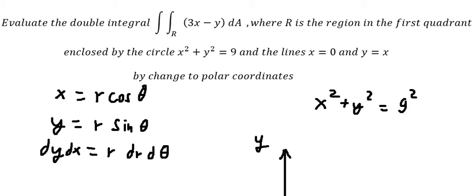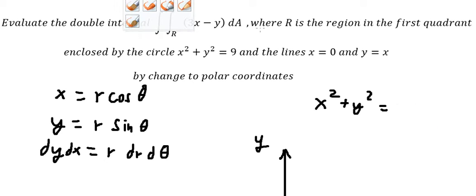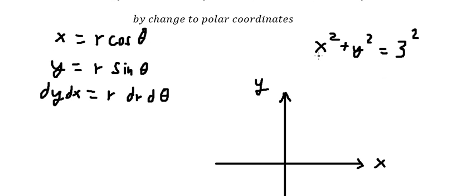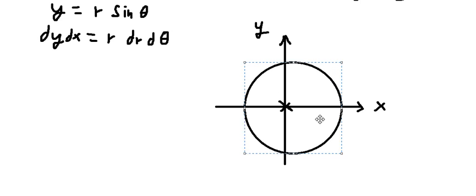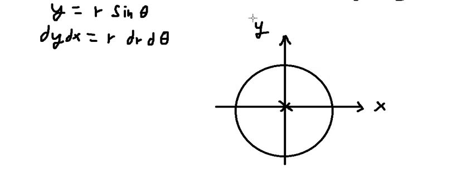We know that y squared equals 9, which is 3 to the power of 2. So the center of this circle is at (0, 0) and the radius is 3. So we have 3, 3, negative 3, negative 3 on the axes.